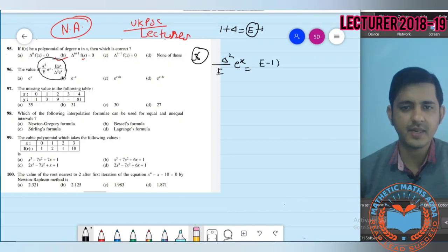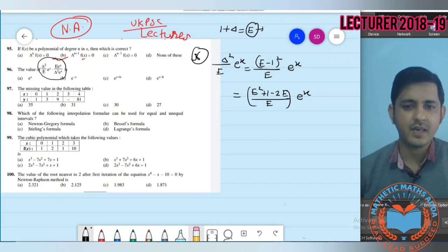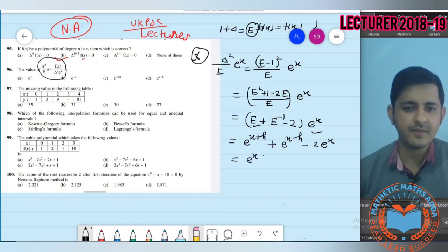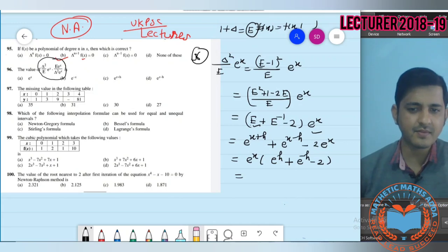Del is equal to E minus 1, so del squared upon E into e to the power x equals (E minus 1) squared upon E into e to the power x. E minus 1 squared is E squared plus 1 minus 2E upon E into e to the power x. Equal distribute, then E squared minus 2E plus 1. If we operate E with e to the power x, it displaces the function.